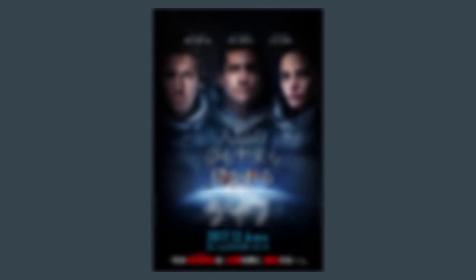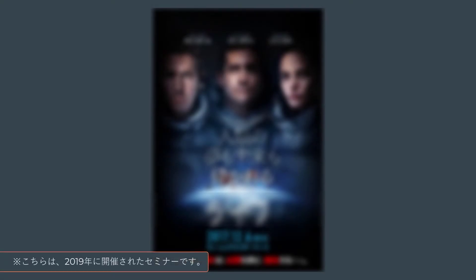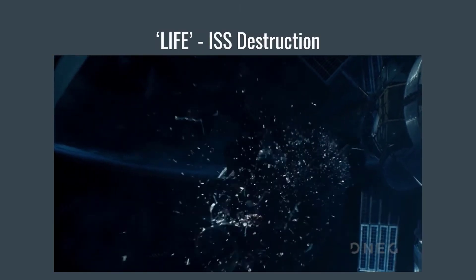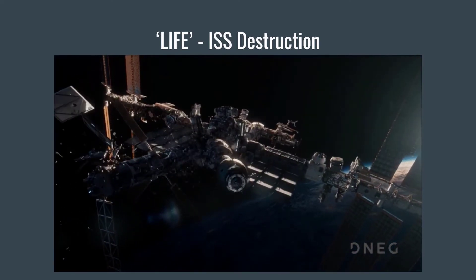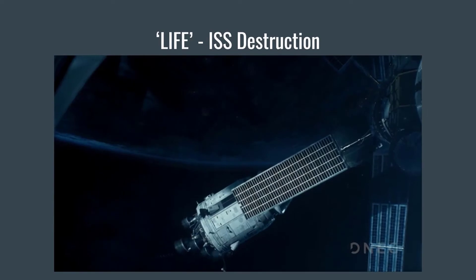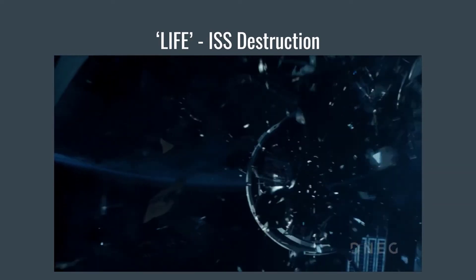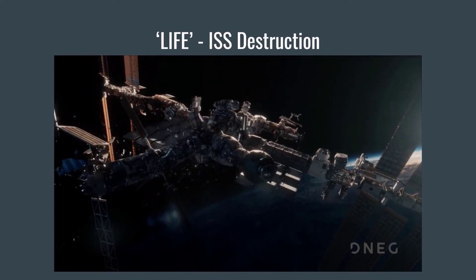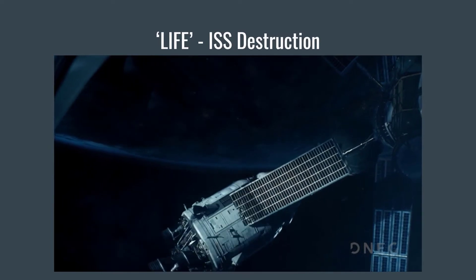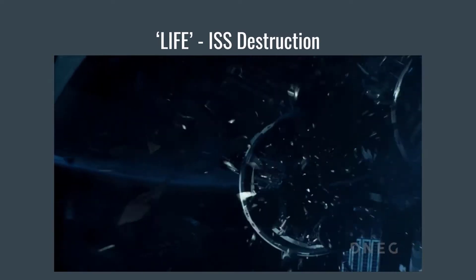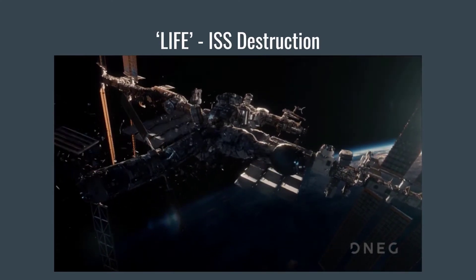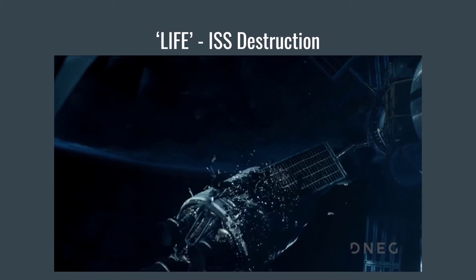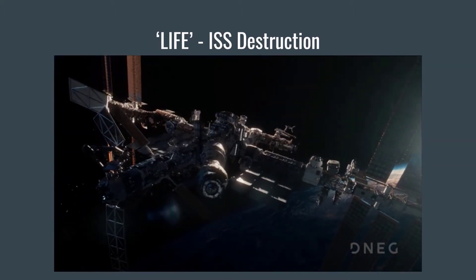Another project where I used a lot of these non-simulated techniques was on the movie LIFE. There's a lot of manual animation happening in this space station destruction. You could animate the slow wobbling of all of the parts of the space station using soft constraints, but sometimes it's much easier to art direct that exactly how you want just by setting a few keyframes.